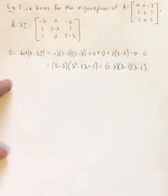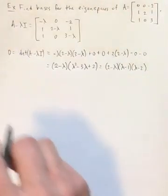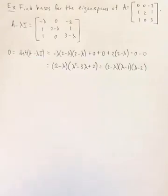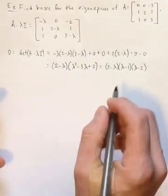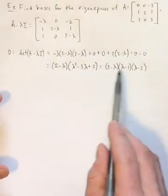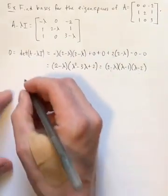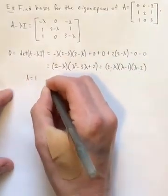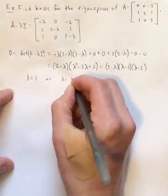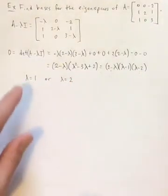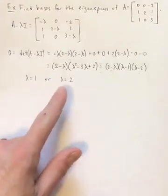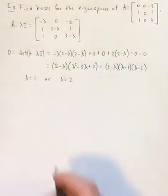So even though we could have gotten three distinct eigenvalues, we actually only end up getting two of them. Notice that 2 is a double root on this polynomial. So we get that lambda equals 1 or lambda equals 2. So there's an eigenspace for this eigenvalue and there's an eigenspace for that one.